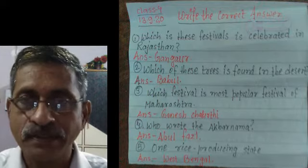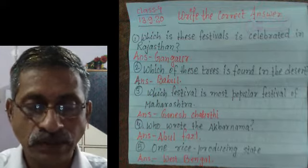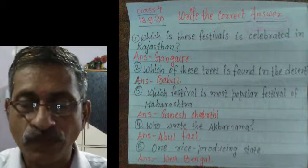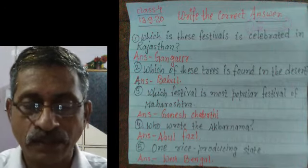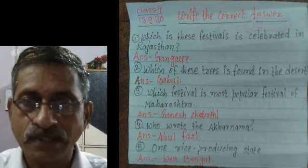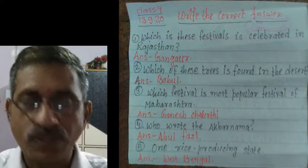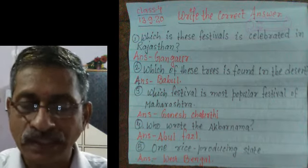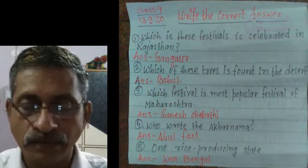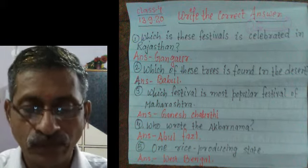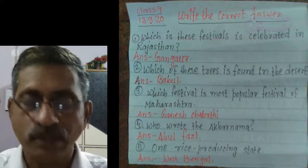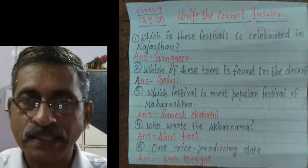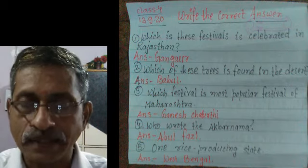Answer: Babul. Question number three: which is the most popular festival of Maharashtra? Answer: Ganesh Chaturthi. Question number four: who wrote the Akbarnama? Answer: Abul Fazl. Question number five: one rice producing state. Answer: West Bengal.